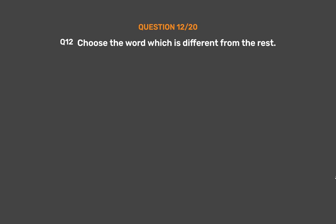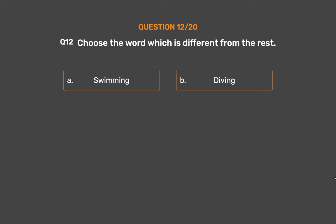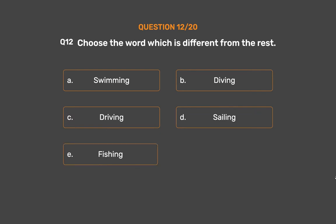Question number 12. Choose the word which is different from the rest. Option A: Swimming. Option B: Diving. Option C: Driving. Option D: Sailing. Option E: Fishing.